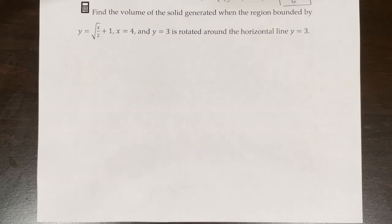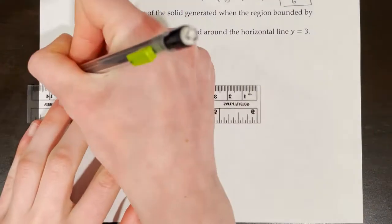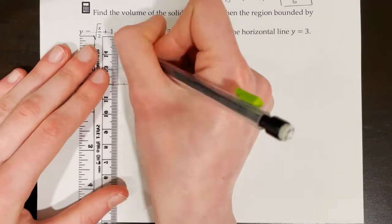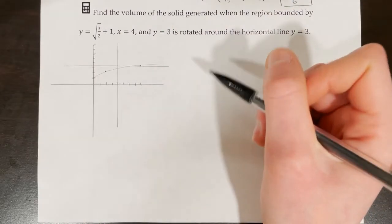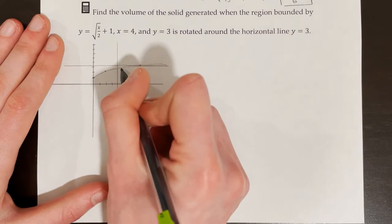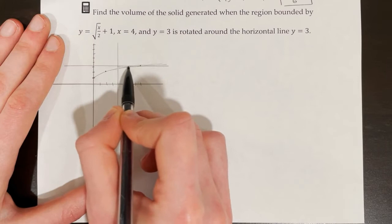Find the volume of the solid generated when the region bounded by y equals the square root of x over 2 plus 1, x equals 4, and y equals 3 is rotated around the horizontal line y equals 3. First, sketch out all of these functions. x equals 4 is a vertical line and y equals 3 is a horizontal line. Label the points of intersection — this is actually a very small region enclosed between those curves.